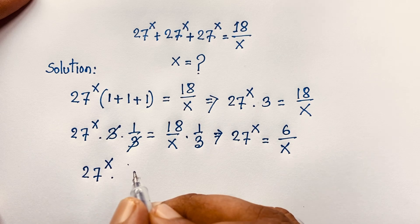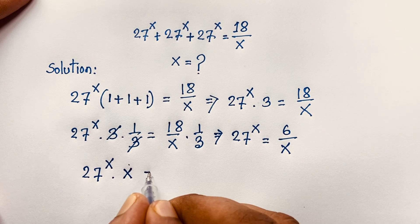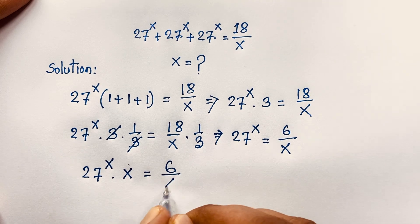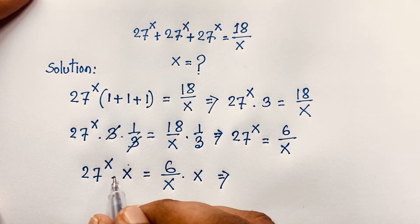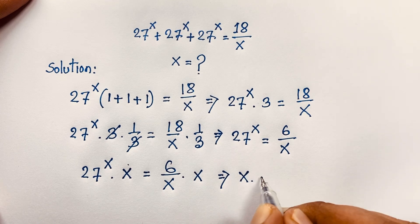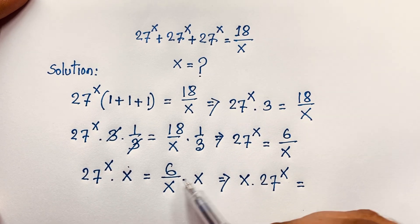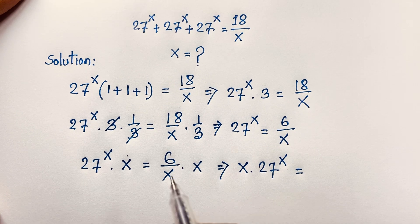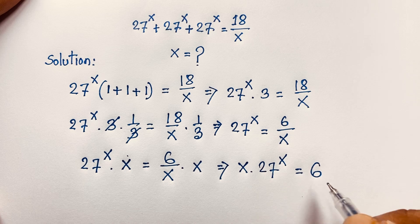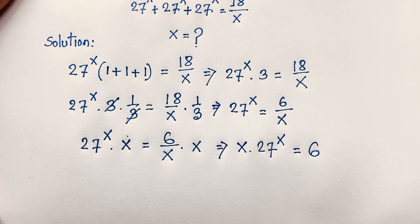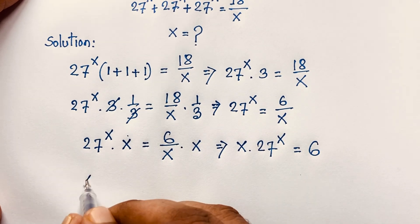Now from 27^x = 6/x, I multiply both sides by x. So x times 27^x = 6. We are finding that x · 27^x = 6.